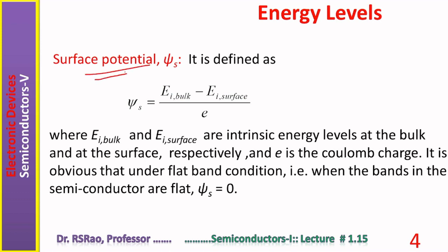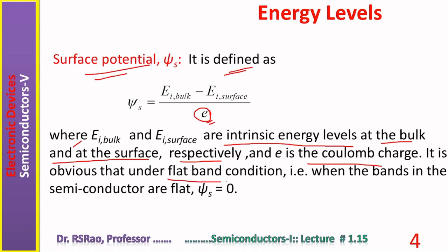Another parameter is surface potential ψ_S, defined as (E_i_bulk − E_i_surface) / e, where e = 1.6 × 10⁻¹⁹ coulombs is the electron charge, and E_i_bulk and E_i_surface are the intrinsic energy levels at the bulk and interface respectively. Under flat band condition, when the bands in the semiconductor are flat, ψ_S equals zero.